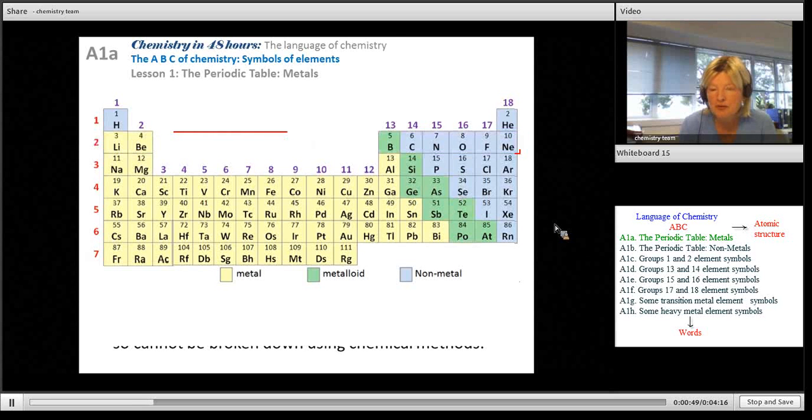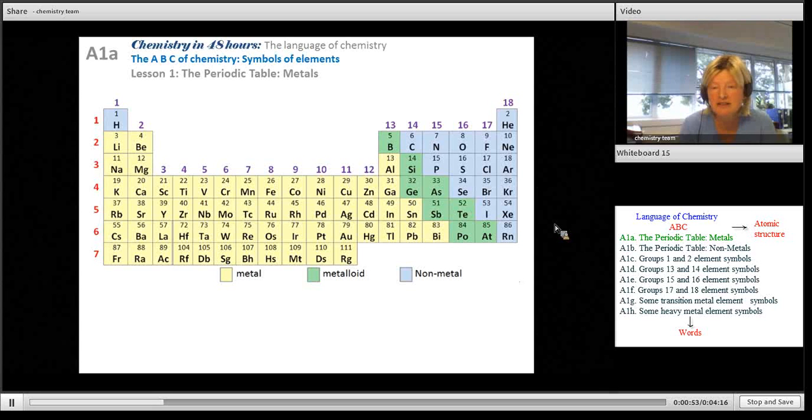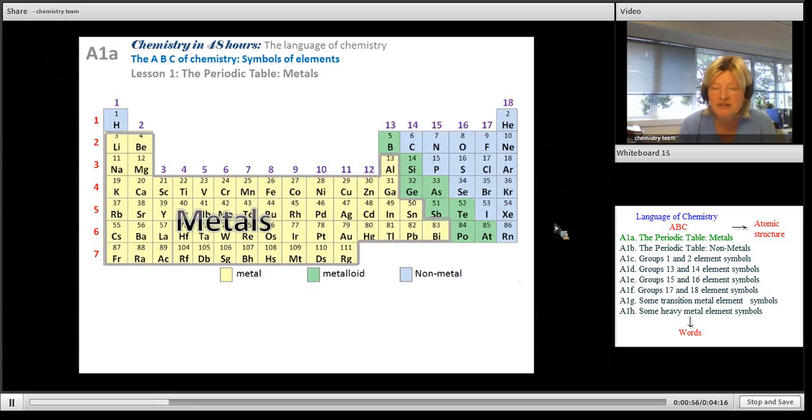Now the elements are broken down into two or three types. First of all, we'll look at the metals in this lesson. The metals you'll see on the left hand side going towards the bottom right. What are metals?